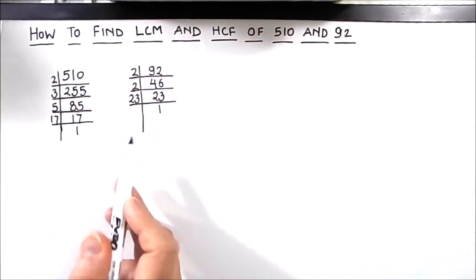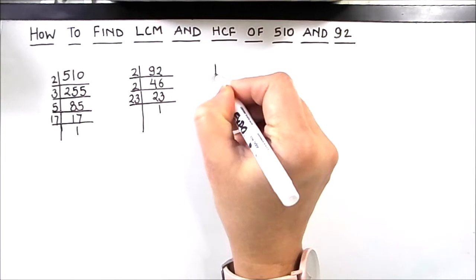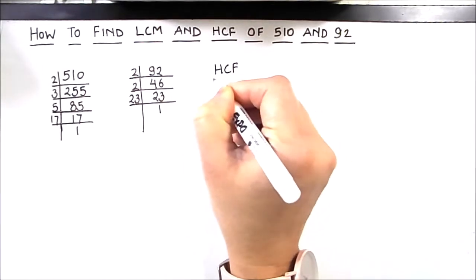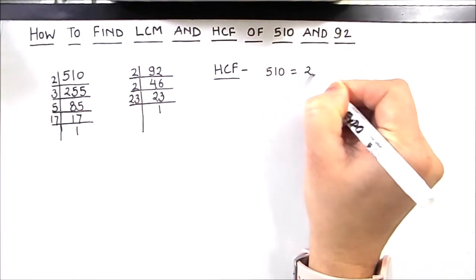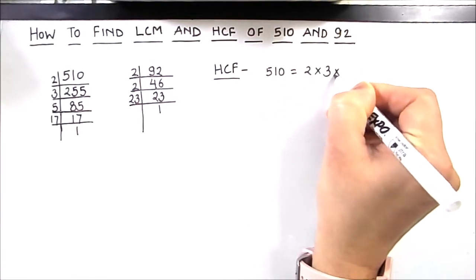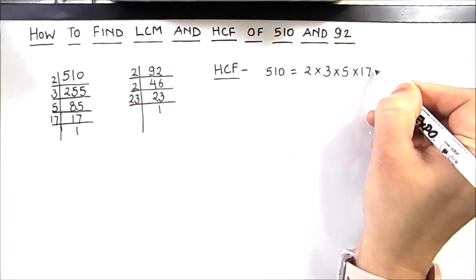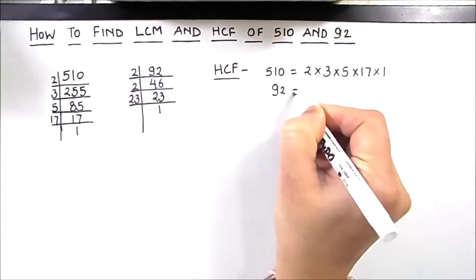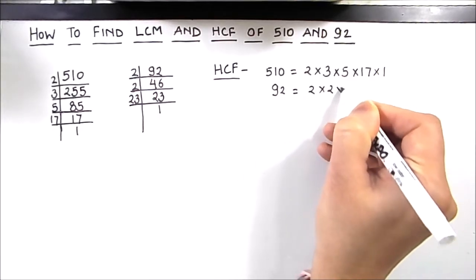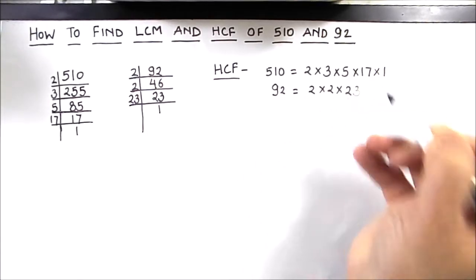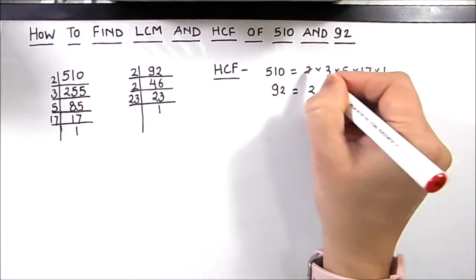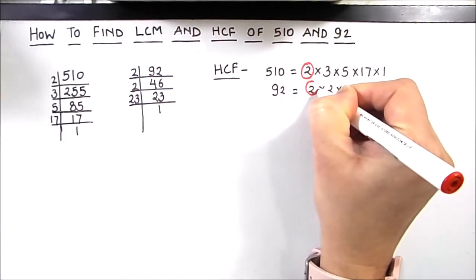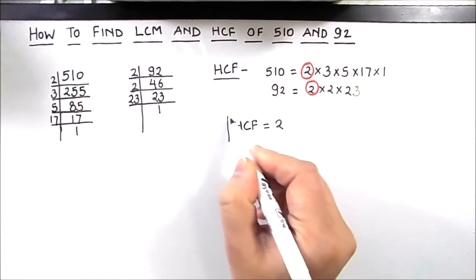Now we have the factors of both numbers. Let us find the HCF. So 510 is equal to 2 times 3 times 5 times 17 times 1, and 92 is 2 times 2 times 23. For finding the HCF, we need to find the common factors between the two numbers. The common factor here is 2, so the HCF of the two numbers is 2.